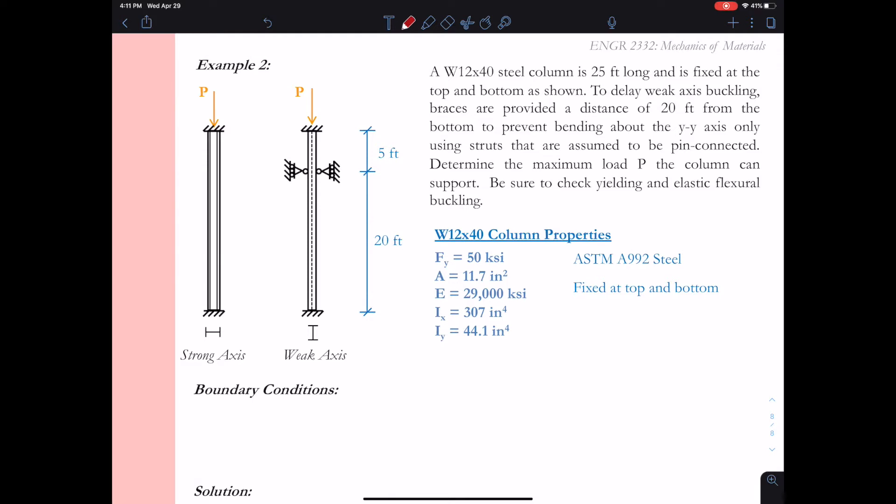In example two, we have a steel column that is a particular shape and is 25 feet long and is fixed at the top and bottom as shown. To delay weak axis buckling, we provide braces at a distance of 20 feet from the bottom. This is only going to prevent weak axis buckling and not strong axis buckling. We'll assume that the braces are pin connected to the column. We want to determine the maximum load P that the column can support and to check both elastic, flexural buckling, and yielding.